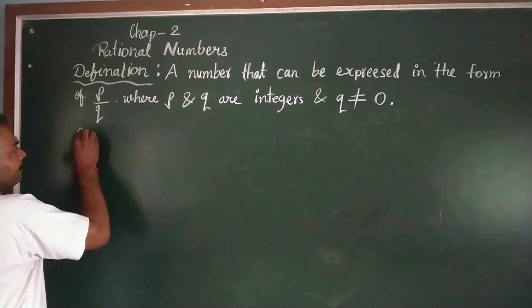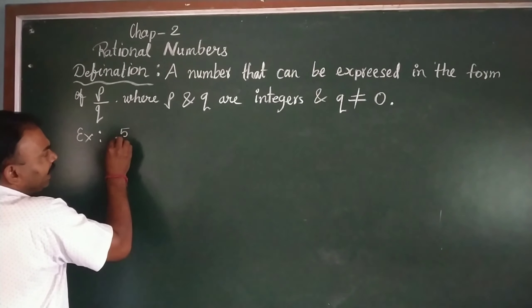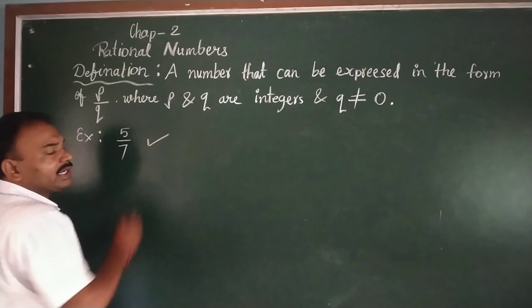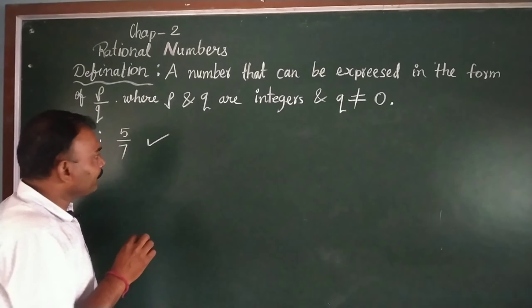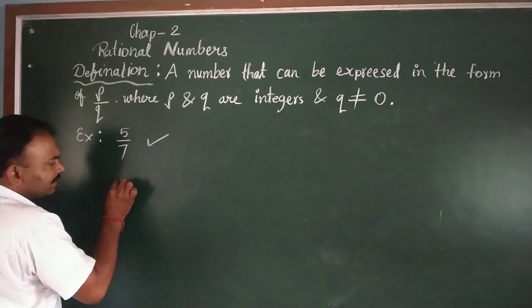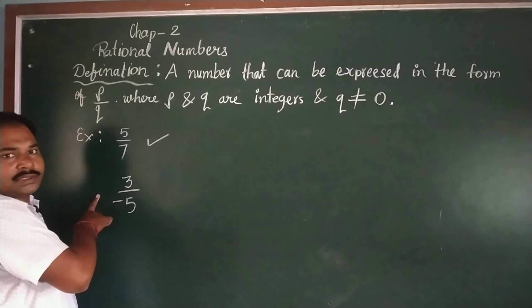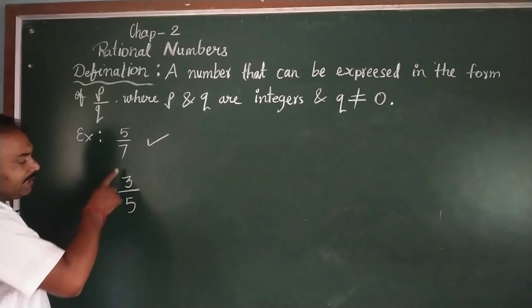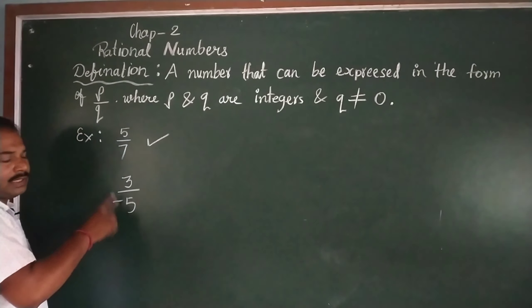For example, if we have written 5 upon 7, what is the rational number? This is the rational number. Because 5 and 7 are integers.